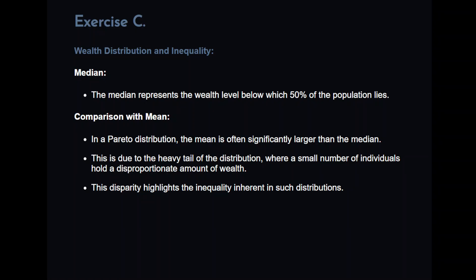A little bit of theory. Now, so why would we use the median? And this is relevant to the economists. The median represents the wealth level below which 50% of the population lies. And in comparison with the mean, in a Pareto distribution, the mean is often significantly higher than the median. You should be familiar with the idea of a skewed distribution and a symmetric distribution. This is a skewed distribution. This is due to the heavy tail of the distribution where a small number of individuals hold a disproportionate amount of wealth. So this disparity highlights the inequality inherent in such distributions. Essentially it is why the median is an important part of this distribution, because it is more informative about the wealth of the general population.